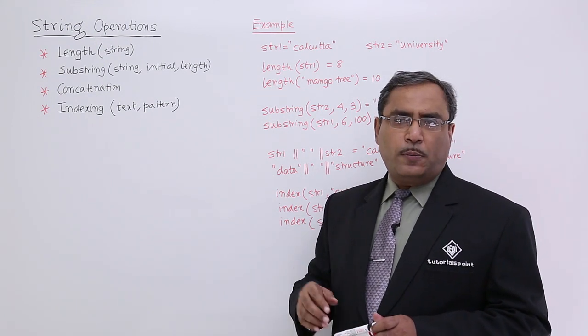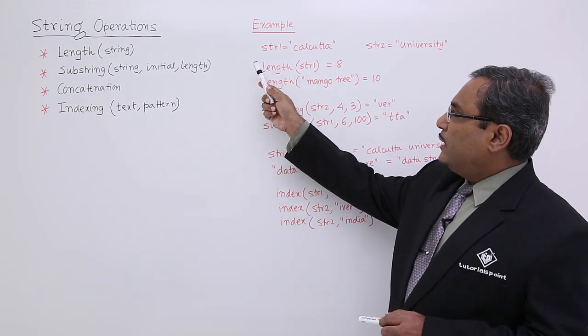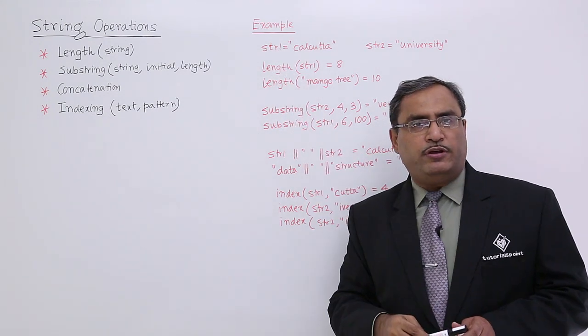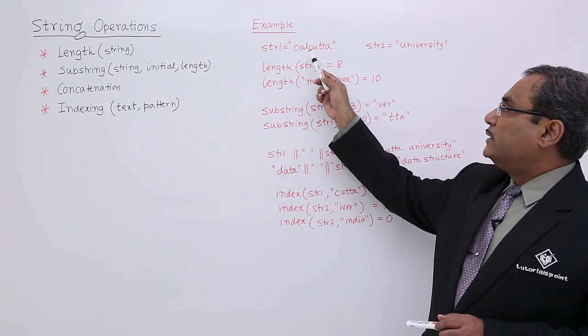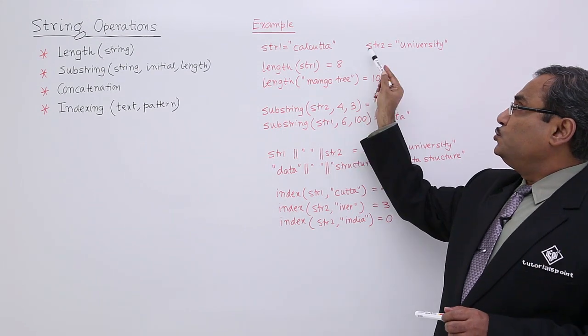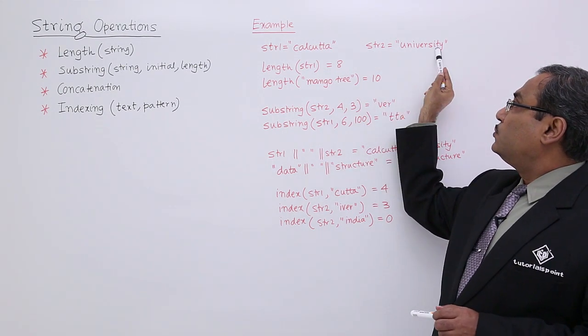Let us explain them with proper examples. At first, we are considering that STR1 is one string variable which is holding Calcutta. STR2 is another string variable which is holding university.